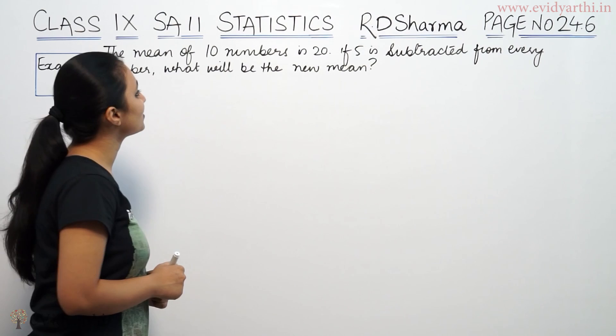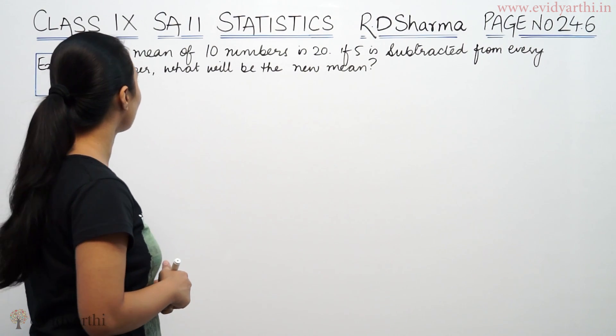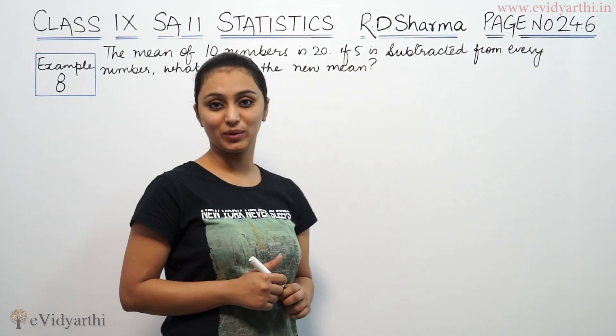It says the mean of 10 numbers is 20. If 5 is subtracted from every number, what will be the new mean?